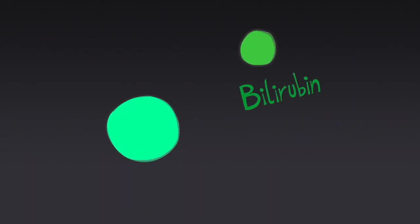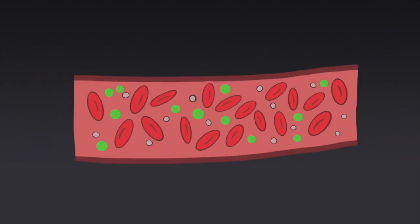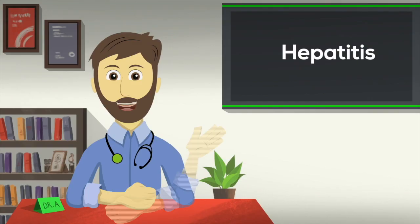It happens when the bilirubin, a component of bile, is not cleared by the liver and has high levels in the blood. This may cause itching as well. Other symptoms of hepatitis depend on how severe the liver damage is.